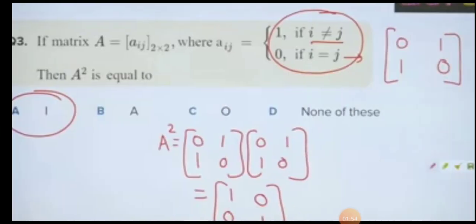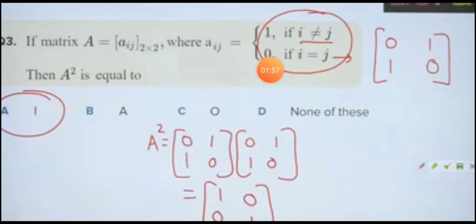Here's a matrix property example. For a matrix where i not equal to j gives 0, and i equal to j gives 1, we have a matrix with 0s on the diagonal and 1s off-diagonal. When we square this 2 by 2 matrix, we get the identity matrix. Therefore, option 1 is correct. Remember this method of representing matrices using conditions.